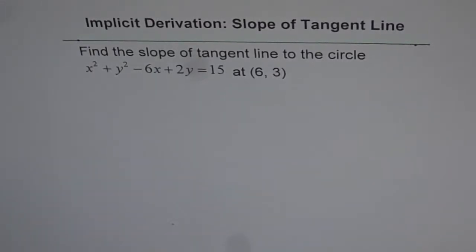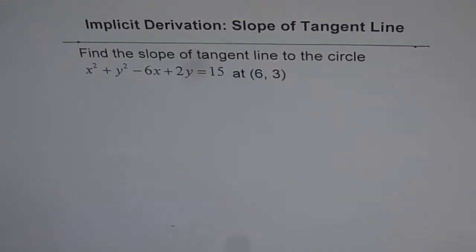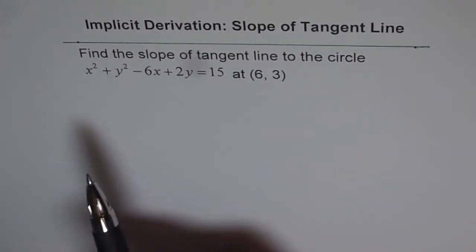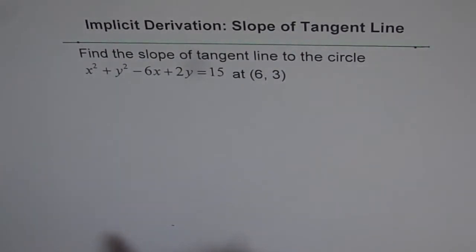Implicit derivation: Slope of tangent line. Find the slope of tangent line to the circle x square plus y square minus 6x plus 2y equals 15 at the point (6, 3).